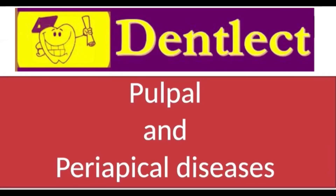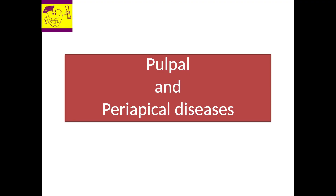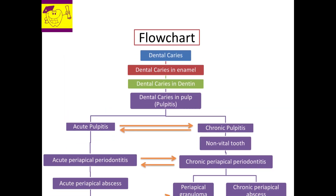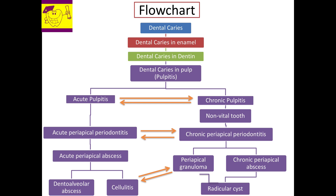Hello students, welcome to Dentalect, your exclusive dental lecture series. Today we will be seeing about pulpal diseases and sequelae of pulpal diseases. This flowchart summarizes the entire sequelae of events starting from dental caries involving the enamel, dentine, pulp, supporting periodontal region, and finally leading to either an abscess or a dental cyst.